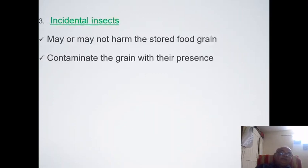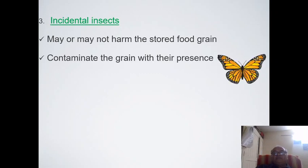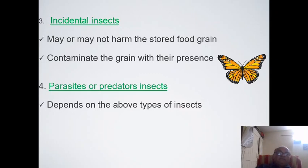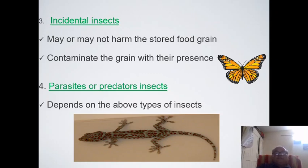Incidental insects may or may not harm stored food grain, but they contaminate grain with their presence — they do not consume or eat anything, but contamination occurs because you may find dead bodies of butterflies and similar insects in the food grain. Sometimes parasites or predator insects are also present — other animals and reptiles that consume these insects — and due to the presence of these predators, grain will again be contaminated.